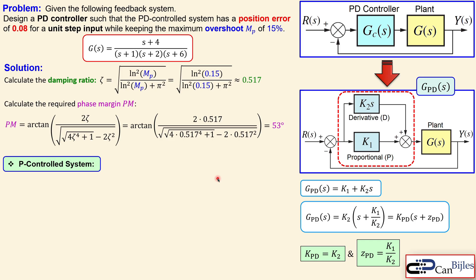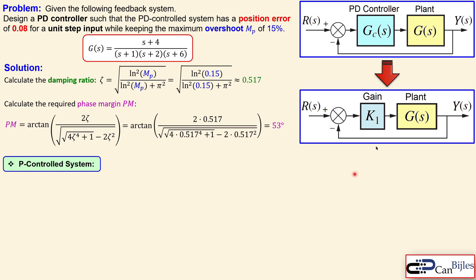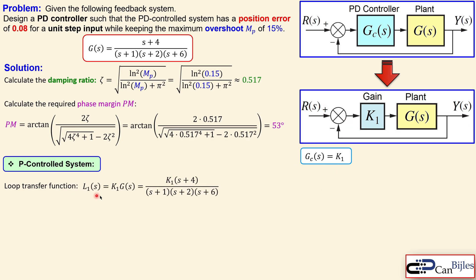We start by analyzing a pure P controller to motivate the use of PD control. With only the gain k1, the controller is just a scalar multiplication. The loop transfer function L1 equals k1 times the plant G(s). We use the position error to find the required k1 value.